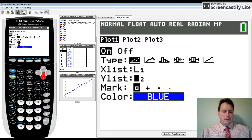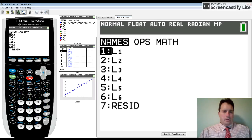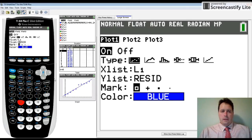It's very similar to what we just did. You're going to hit second stat. As you can see, number seven on this is residual. On some calculators, it might be under one. But wherever you see residual, you just push that, and now it shows up on the y list.